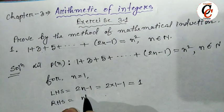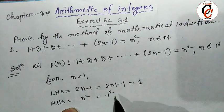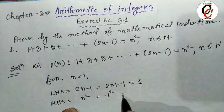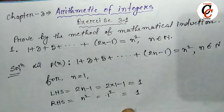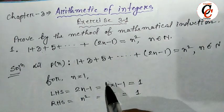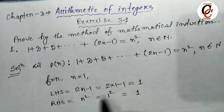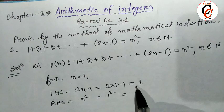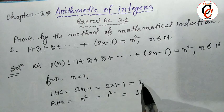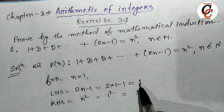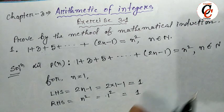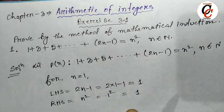The right hand side is n squared — n squared means 1 squared, which also equals 1. That means the given statement is true for n equal to 1.